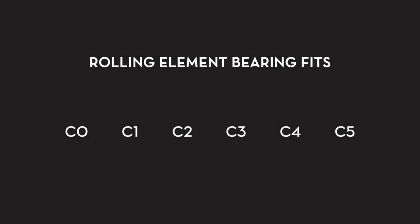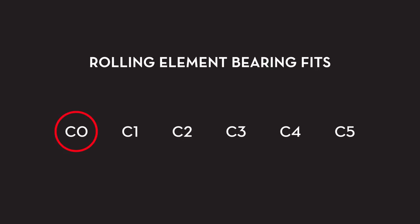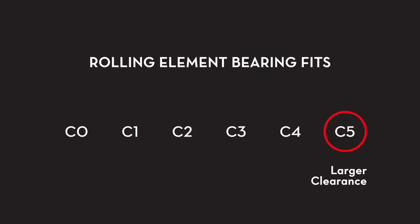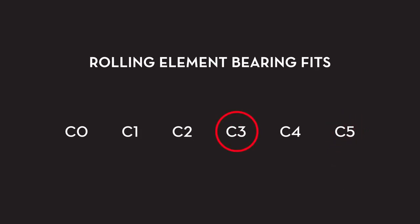Rolling element bearing clearances, or FITs, are classified from C0 to C5. C0 FITs exhibit very small internal clearances and C5 FITs are much looser. Most machines in industrial manufacturing utilize C3 FITs.